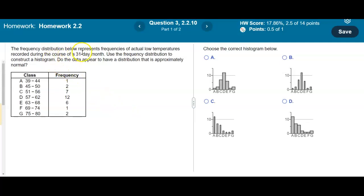The frequency distribution below represents frequencies of actual low temperatures recorded during the course of a 31-day month. Use the frequency distribution to construct a histogram and do the data appear to have a distribution that is approximately normal.